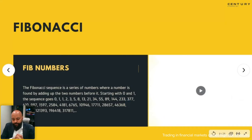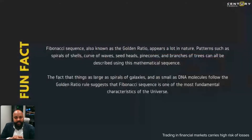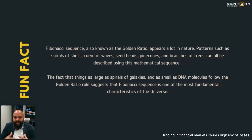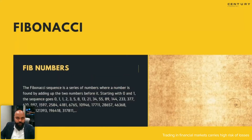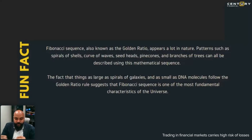Fibonacci numbers are very interesting because they appear everywhere in life. The Fibonacci sequence, also known as the golden ratio, appears a lot in nature — patterns such as spirals in shells, curves of waves, sea shells, pine cones, and branches of trees can all be described by this mathematical sequence. The fact that things as large as spirals of galaxies and as small as DNA molecules follow the golden ratio rule suggests that Fibonacci sequence is one of the most fundamental characteristics of the entire universe.